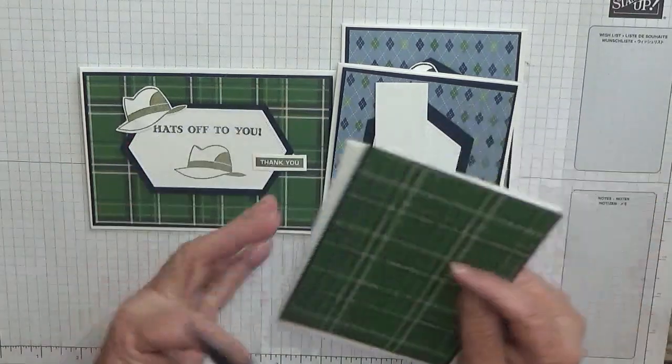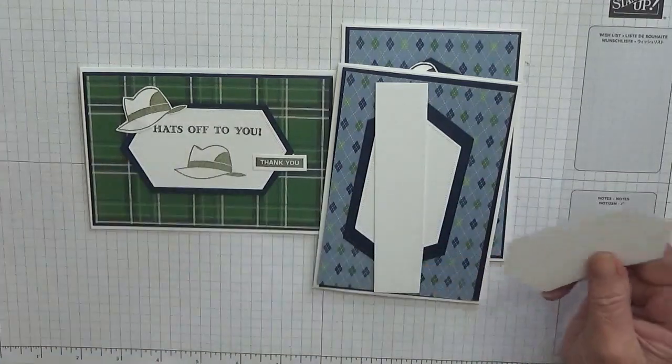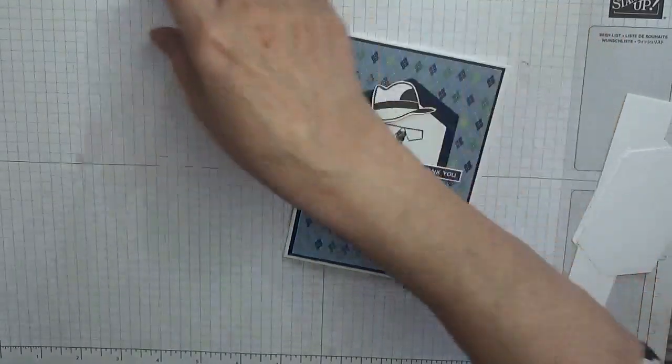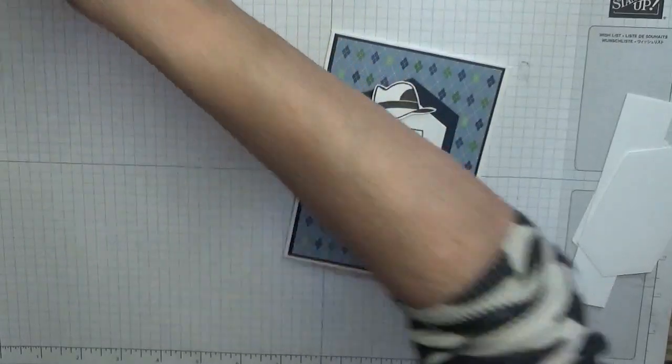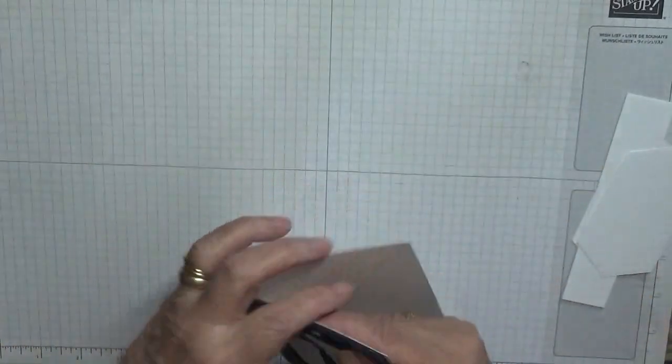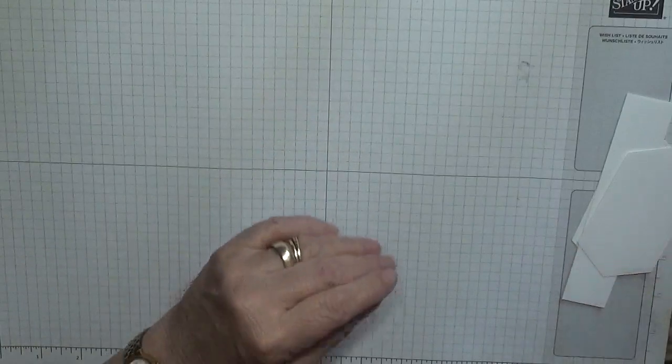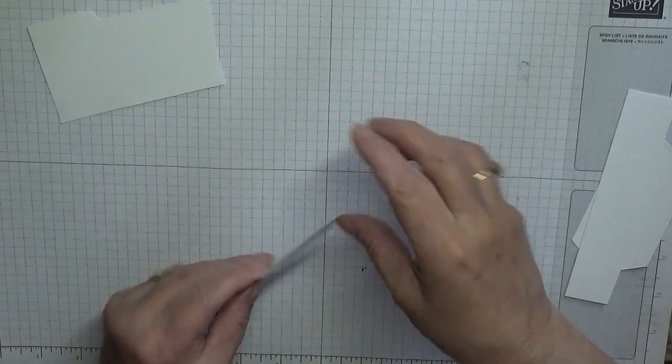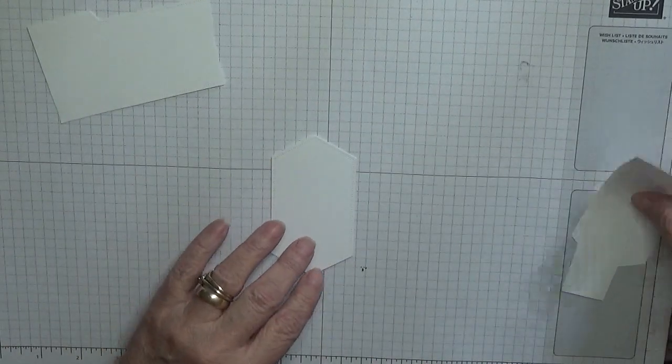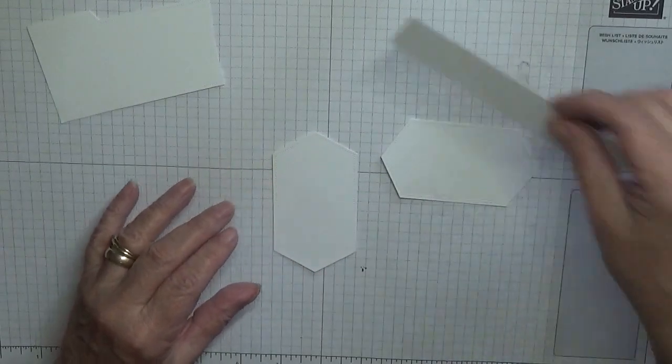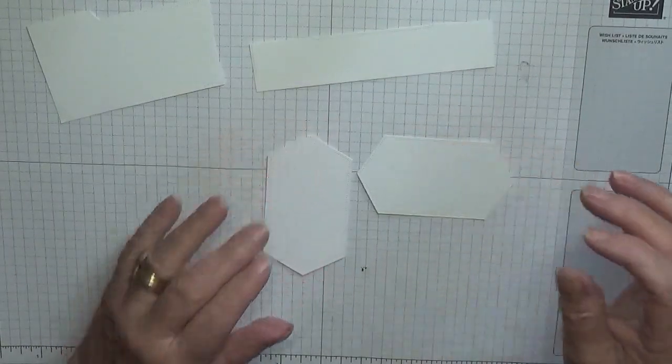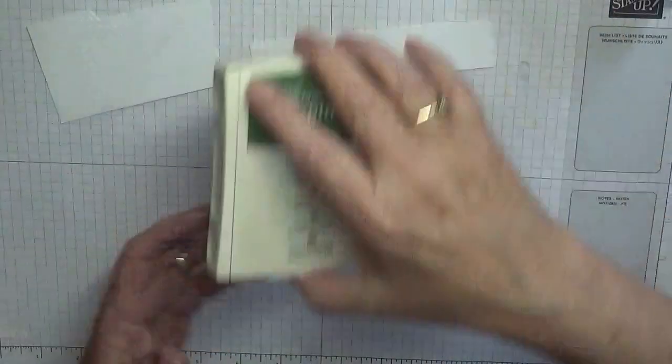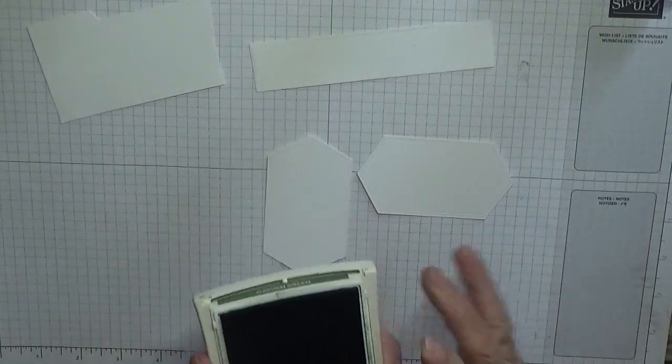Let's do our stamping. I need a bit of scrap for the two hats. I'm going to stamp one that way and one that way, and that's for the sentiments. Let's stamp the hat first, so this is Garden Green.